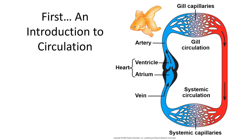A fish has a heart that has two chambers. We of course have four chambers in our heart. In the fish heart we have the atrium that receives deoxygenated blood from the body, and then we have the ventricle that's going to force blood towards the gills. In between the atrium and the ventricle we have a valve that prevents blood from flowing in the wrong direction. At the gills, the blood is going to dump off carbon dioxide and pick up oxygen, then travel to the systemic capillary beds.